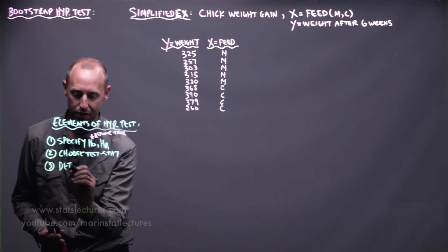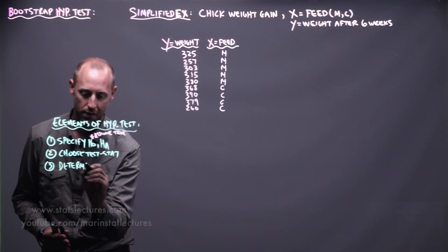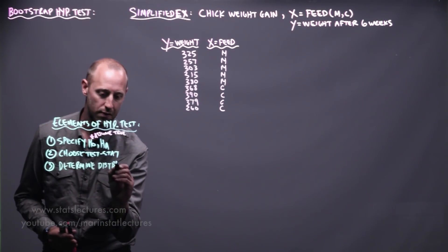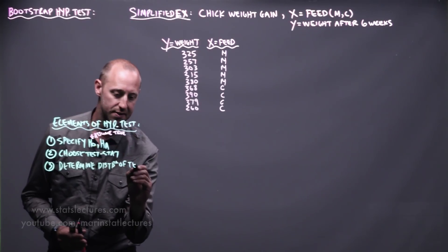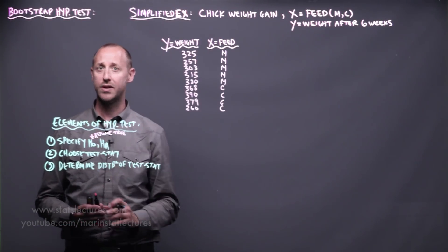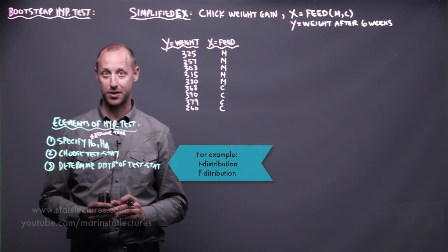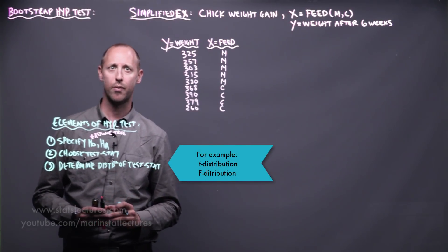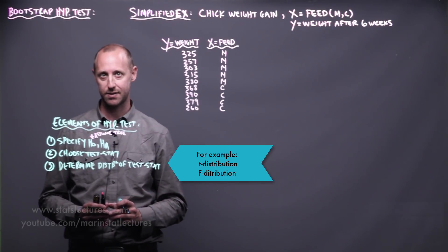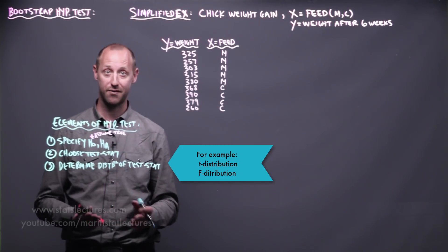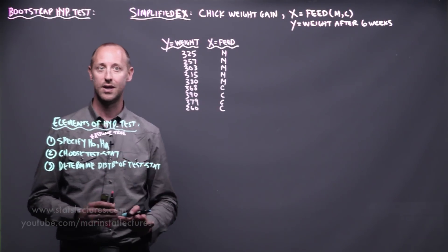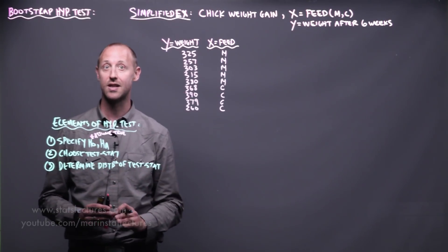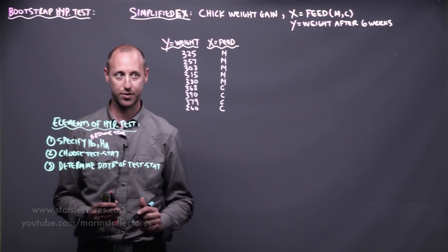Then we determine the distribution of the test statistic. When we did two-sample t-tests, the distribution of our test statistic was a t-distribution. When we worked through analysis of variance, we assumed our test statistic followed an F-distribution. In a bootstrapping approach, we're going to build the distribution of our test statistic through resampling.